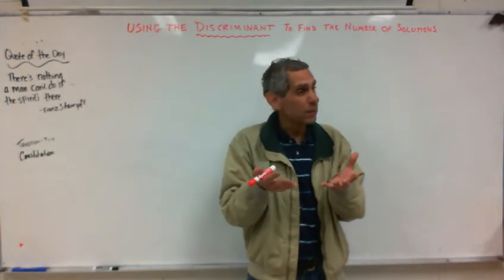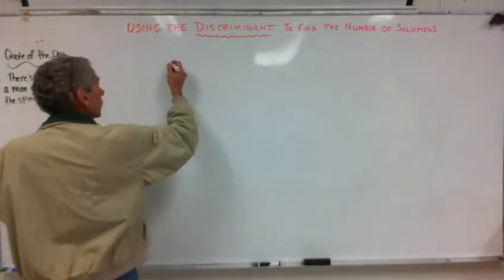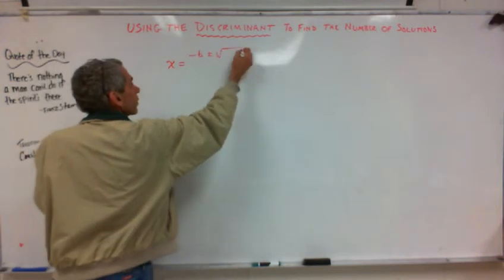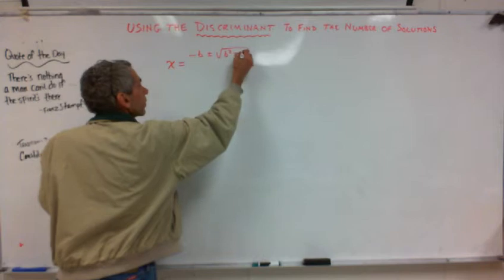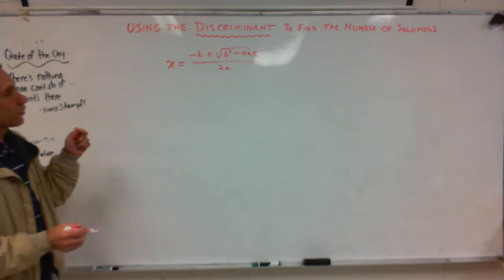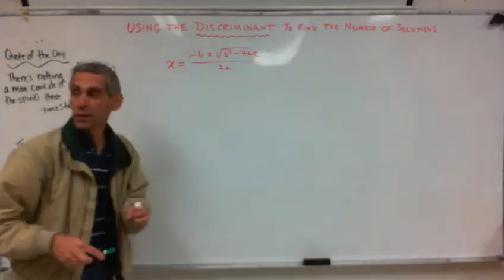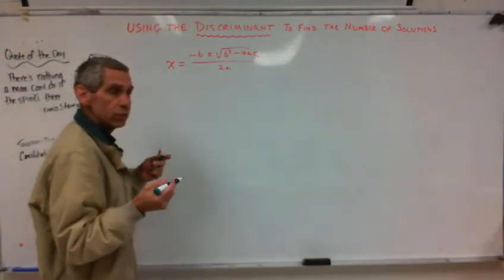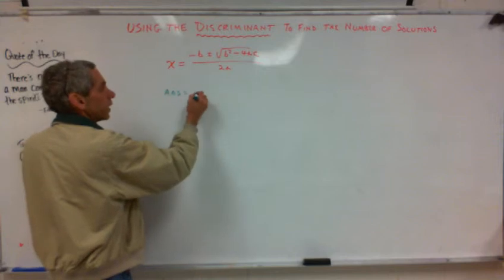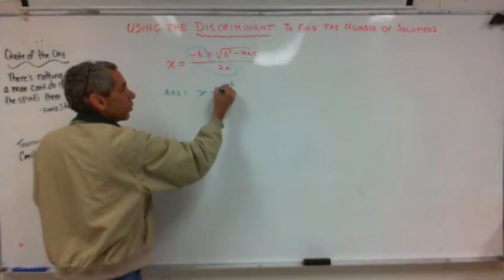The discriminant is actually part of the quadratic formula. What's the quadratic formula? X equals negative B plus or minus the square root of B squared minus 4AC, all over 2A. You already use the axis of symmetry formula — X equals negative B over 2A. Look at that, negative B over 2A is right there in the quadratic formula.